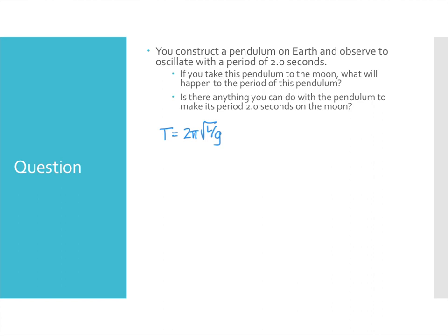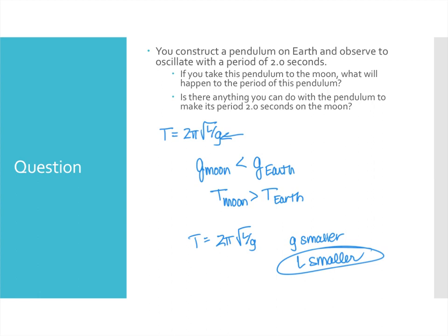It says we have a pendulum on Earth and it has a period of two seconds. If you take the pendulum to the moon what will happen to the period of this pendulum? So we know that the acceleration of gravity on the moon is smaller than it is on Earth, so if we put in a smaller value here the period that we get on the moon is going to be bigger than the period we had on Earth, so it's going to be some value longer, bigger than two seconds, so maybe three or four. And then we go, well can we change the pendulum to make its period two seconds? Well because the period is equal to square root L over g, if g gets smaller we could sort of compensate by making L smaller, and so then that could kind of offset the decrease in gravity, and so we can probably bring that pendulum back to a period of two seconds by decreasing the length of the pendulum.